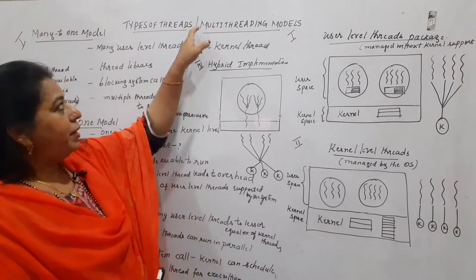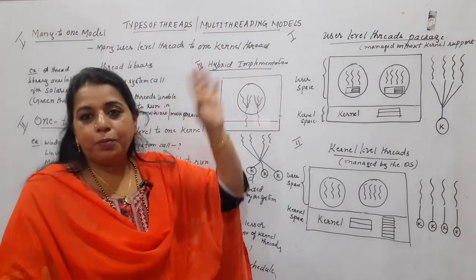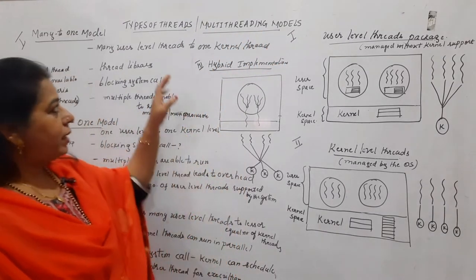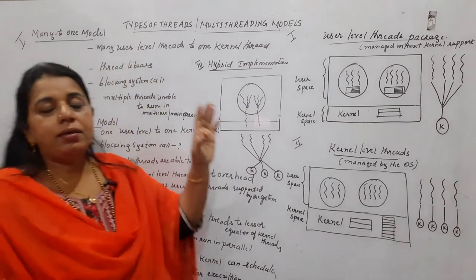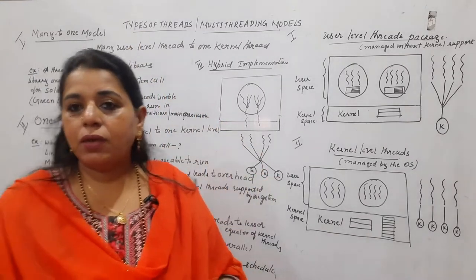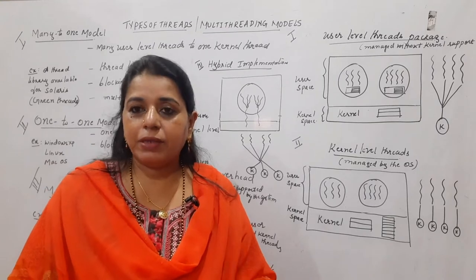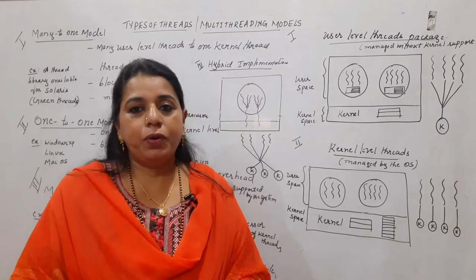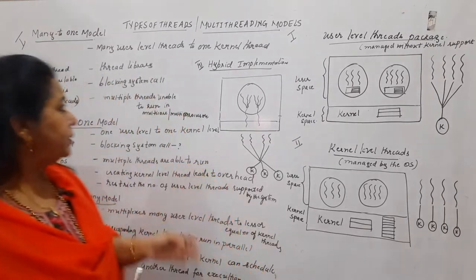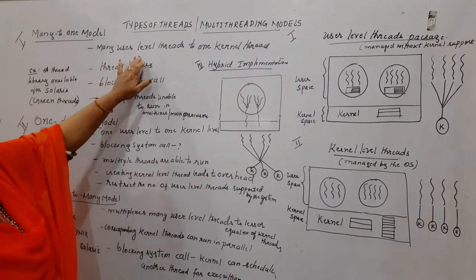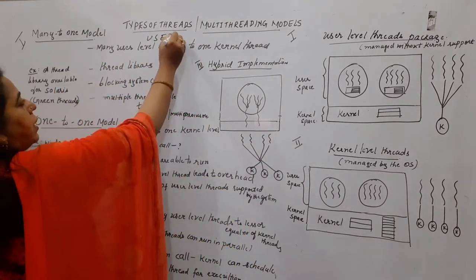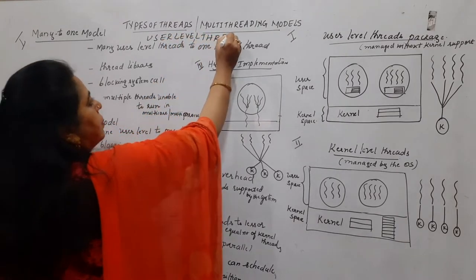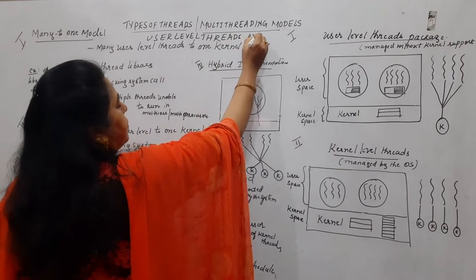What are the different multi-threading models? First, let us see the types of threads. A thread can be of two types: one is the user-level thread and another is the kernel-level thread.